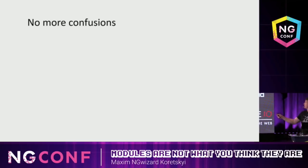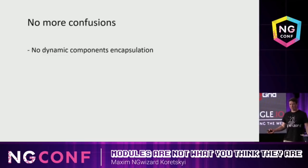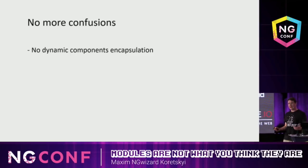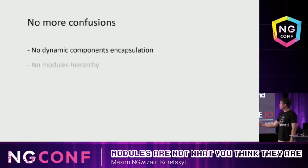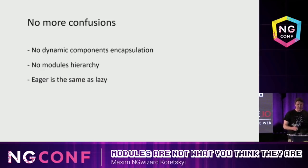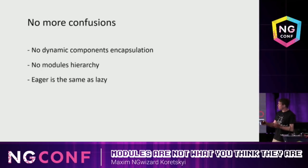So what we've learned is that no matter how many modules you import, after compilation you still get only one single factory and single injector. Now let's revisit the common confusions we started with. There is no encapsulation for dynamic components and providers — because after compilation you don't have several modules, you have only one single factory and injector, and the compiler cannot know where and how you will use dynamic components. There is no module hierarchy between imported modules, again because we don't have several modules. And eager-loaded and lazy-loaded modules are exactly the same, because they go through the same process of compilation and instantiation.